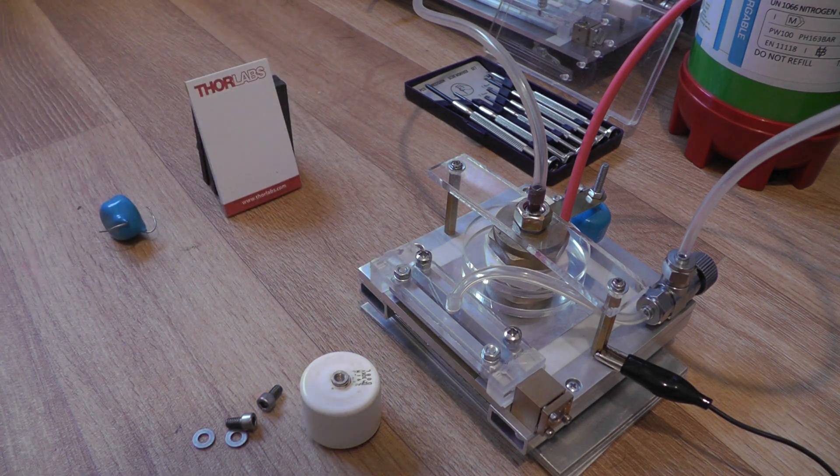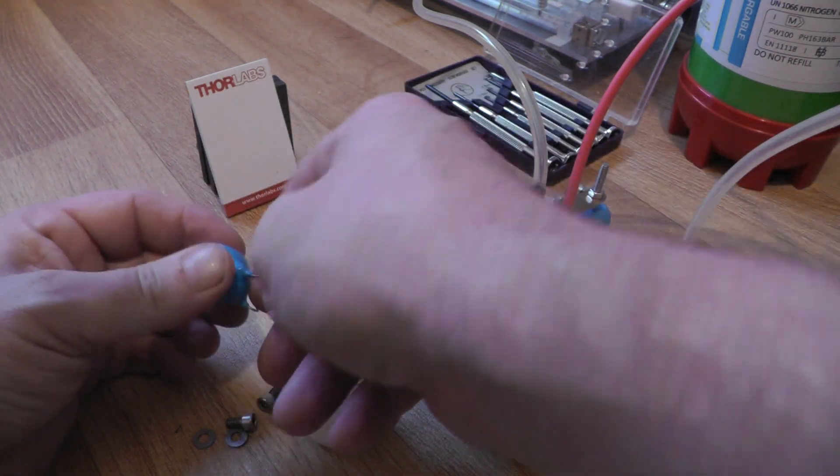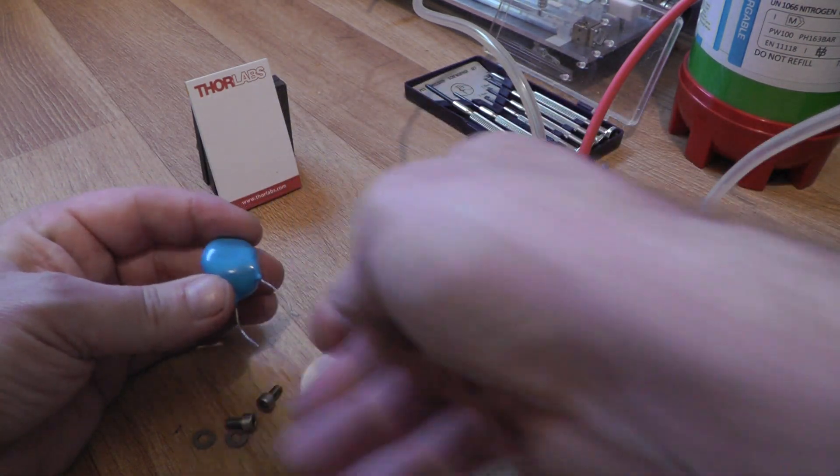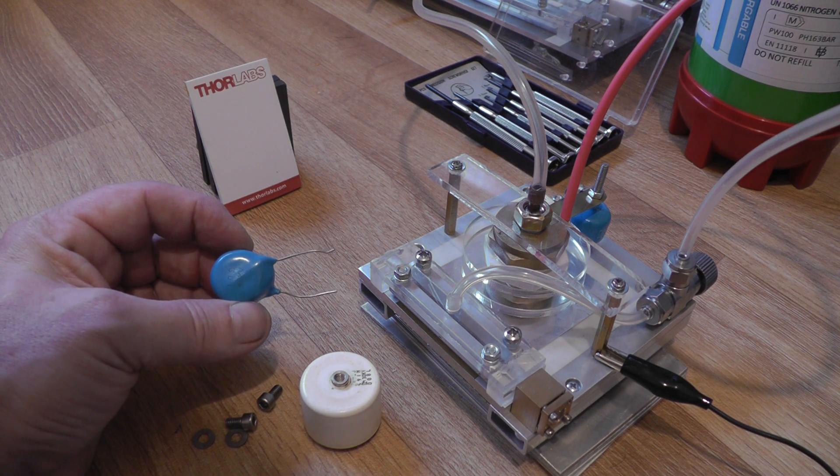That said, if you can't get hold of doorknob capacitors, it would seem really quite apparent, we've just seen it here and now, that wire-ended caps will do a reasonable job. It's just a case of insulating these things correctly.